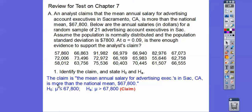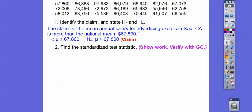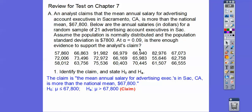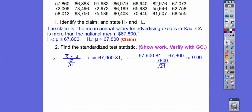Remember, the null always has the equals involved in it, so this would be less than or equal to, and the alternative is our claim. So let's find the standardized test statistic. On your test it's going to ask you to state that formula. For the Z-score formula, because they gave us the population standard deviation, you need the mean. The population mean is $67,800. So we do sample mean minus 67,800, divided by 7,800 over the square root of 21. Plugging that in, we get about 0.06 — that is our Z-score.